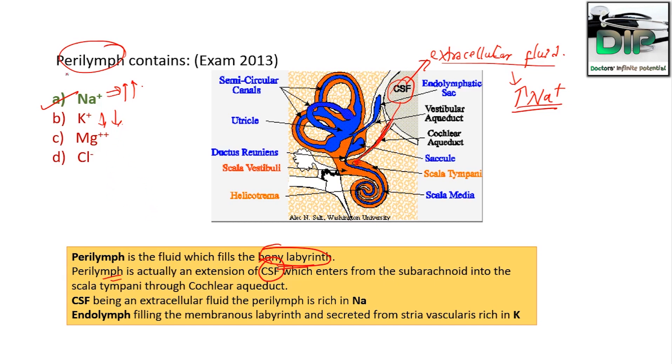If the question had been 'endolymph contains,' then we would take potassium as the answer.